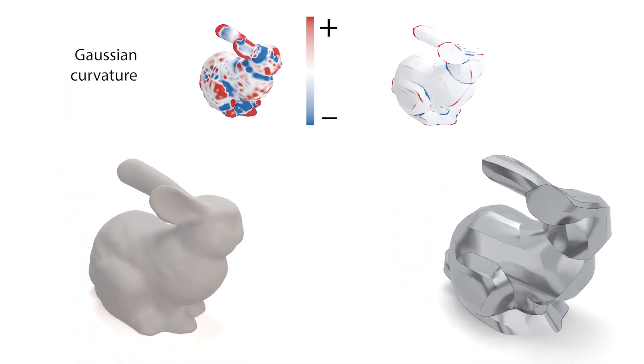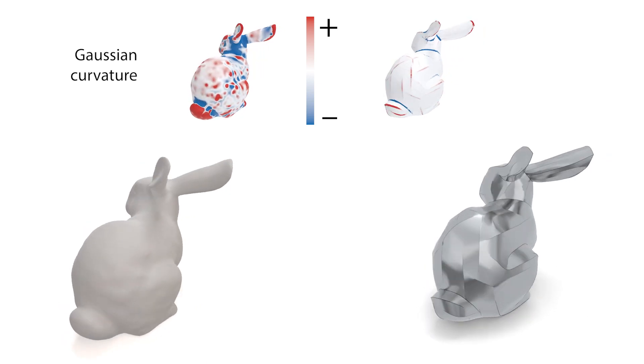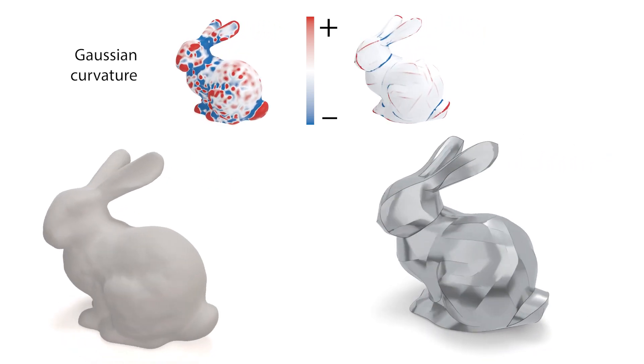Applying our method to a surface will significantly reduce its gaussian curvature and concentrate it onto a sparse collection of seam curves.